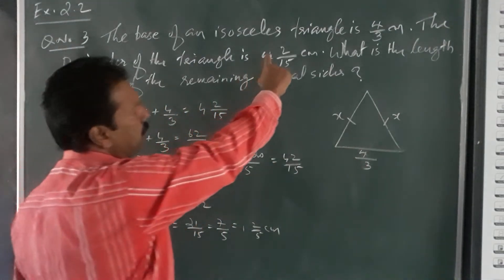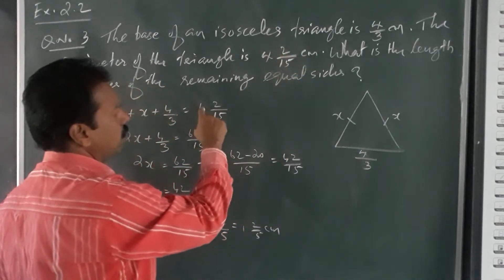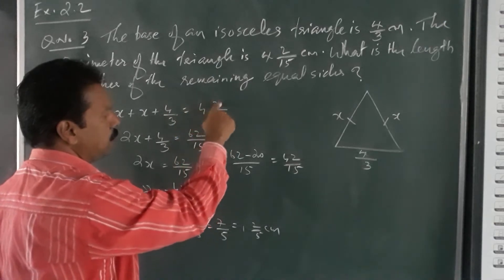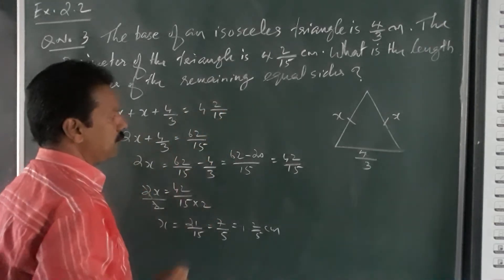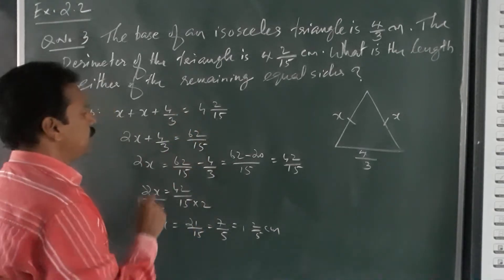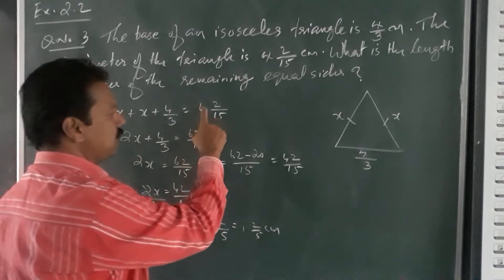What is perimeter given? 4 and 2 by 15. 15 into 4 is 60, 60 plus 2 is 62 by 15. This is a mixed number, this is improper fraction, and for calculation you have to change the mixed number into improper fraction.